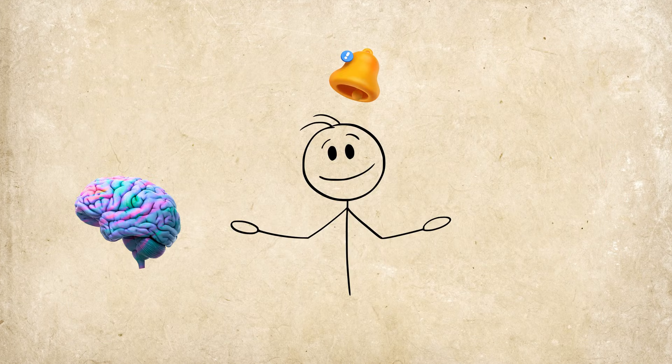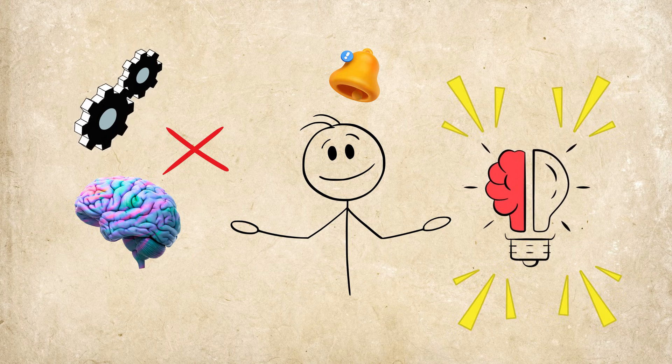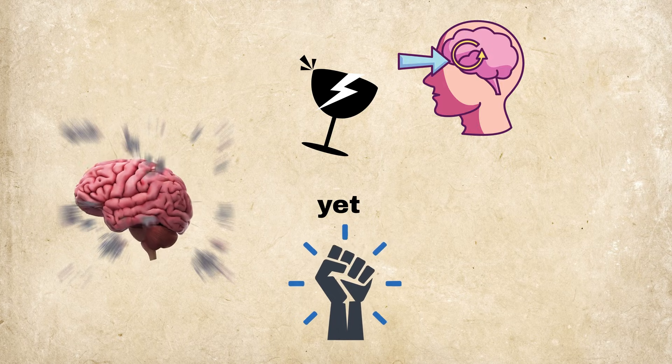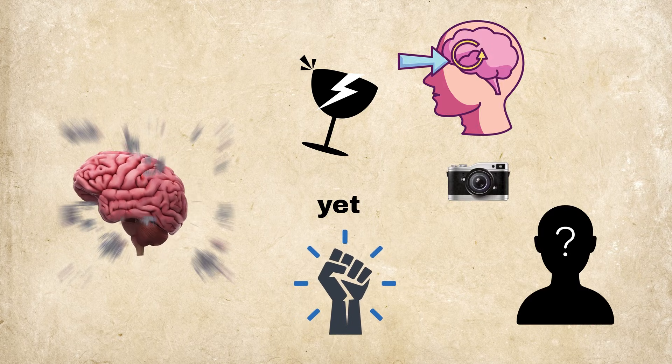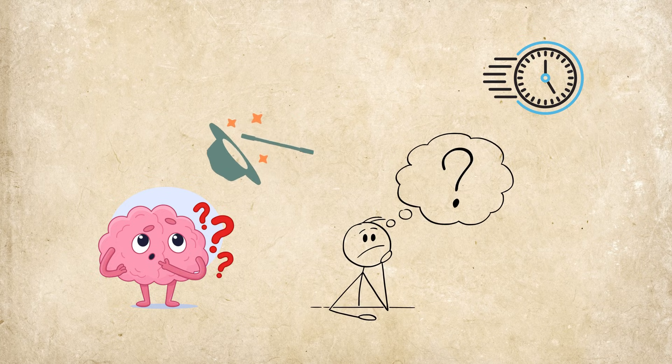These glitches remind us that our brains are not perfect machines, but living dynamic systems full of surprises. They show us how fragile yet powerful perception, memory, and identity really are, and sometimes how our minds play these curious tricks just to keep us wondering what's real.